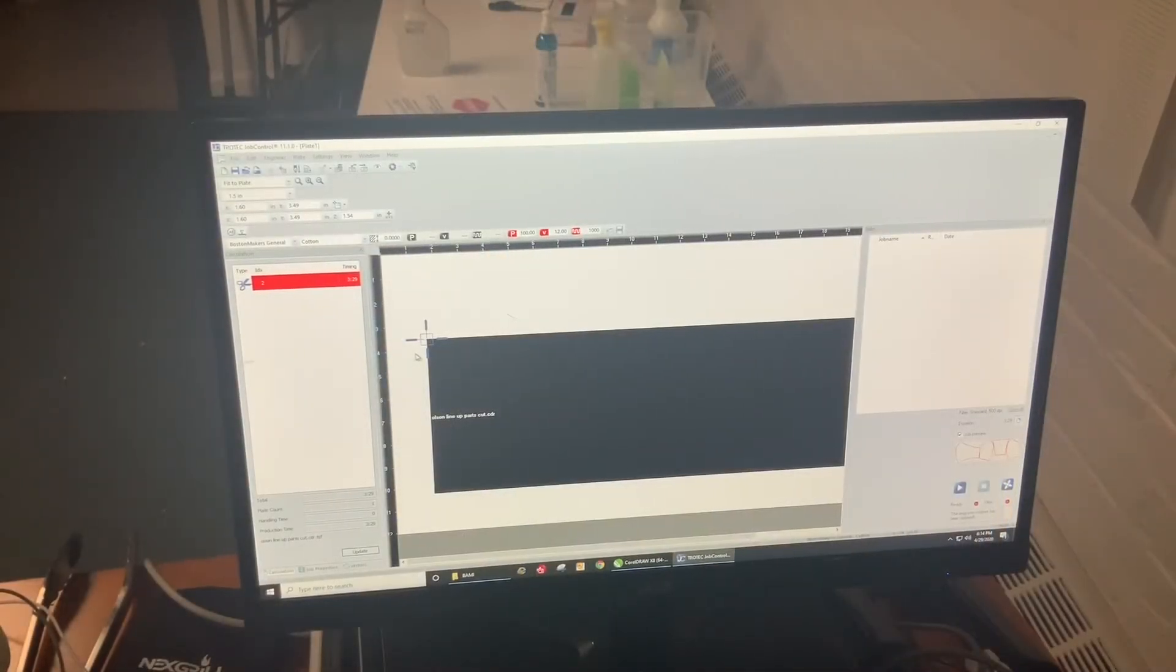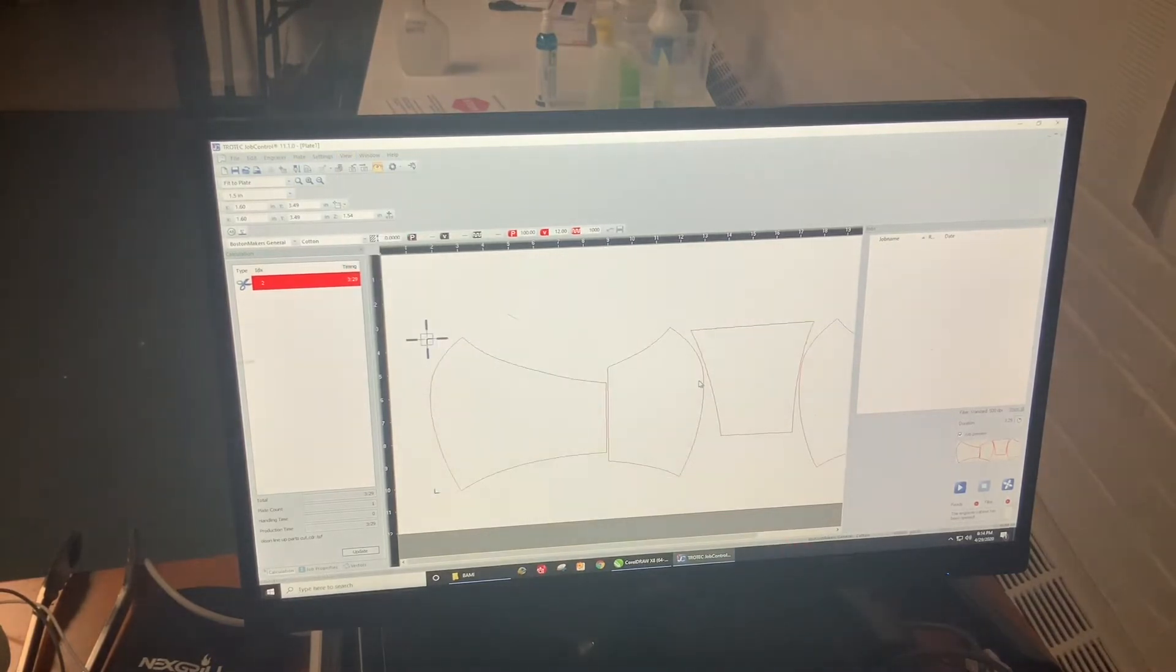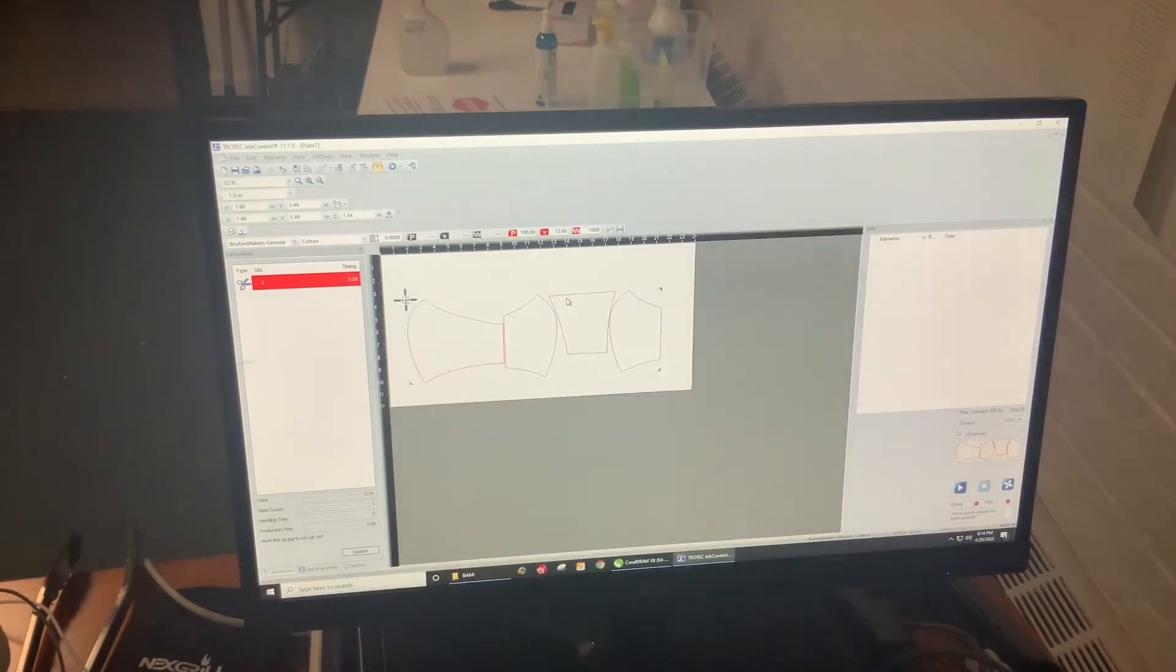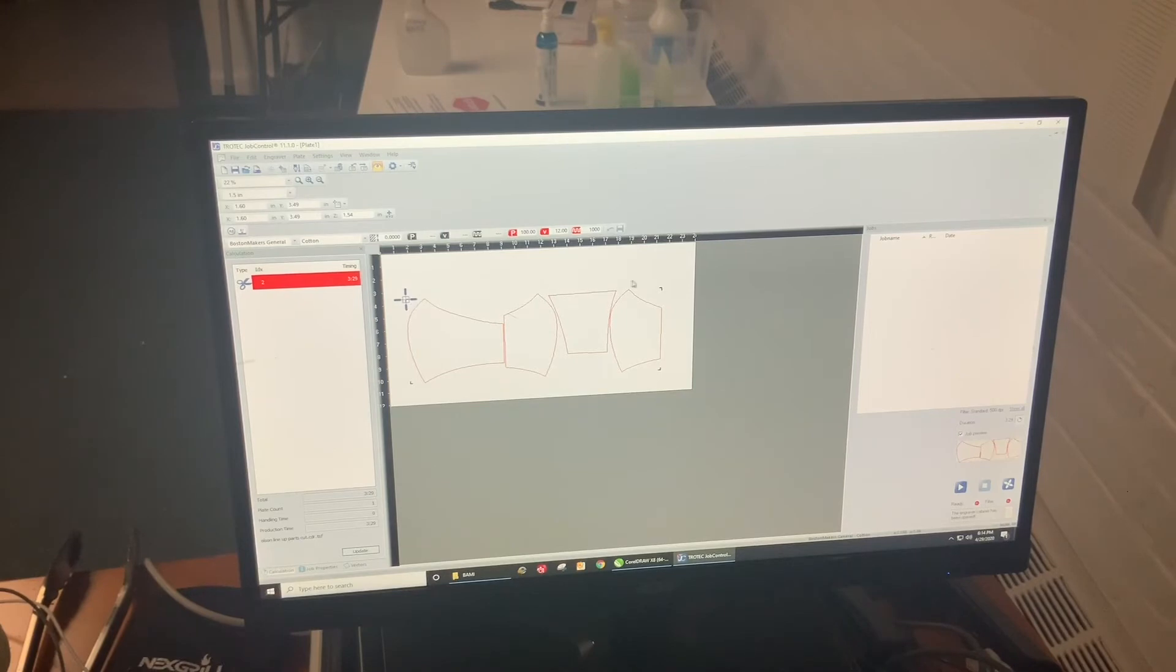Okay, so here is our job. We're calling it Olsen Line Up Parts Cut. If I turn on WYSIWYG and zoom out a little bit, you can see what I've got on the plate here. I've got the face, the mouth, cheek, and another mouth. Of course this means we're going to get more mouth parts than we do the others, but this is what fits nicely and maximizes what we can get out of a swath of bolt that's been folded over once on itself.